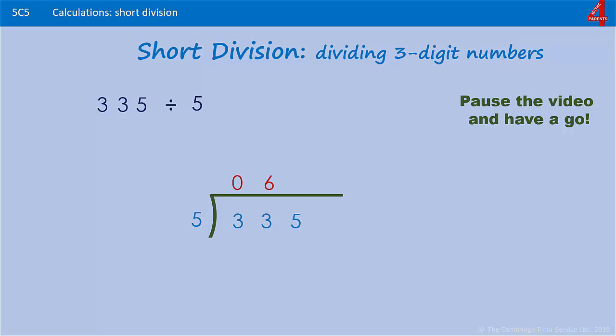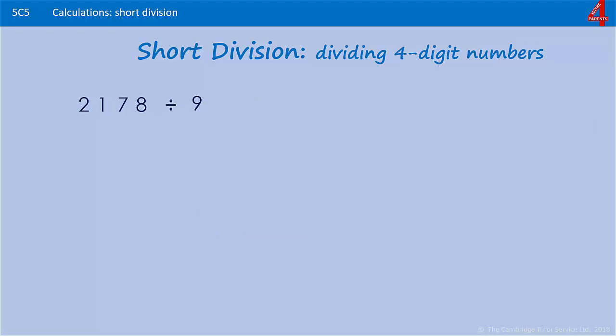Out of 33 there are 3 left over, so we put that 3 with the next digit to make 35. How many times will 5 go into 35? 7 times 5 is 35, so 335 divided by 5 is 67. Also in year 5, some children will be introduced to dividing four-digit numbers by a one-digit number, so we'll have a few of those for you to try as well.